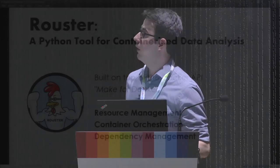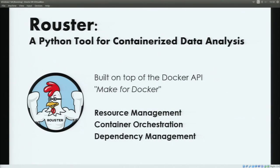I was tinkering with Docker a bit on my own time and I happened upon these problems, so I decided to start writing a small tool called Rooster, which is built on top of the Docker API. If you would summarize it in one sentence, you could say that it's make for Docker. It provides basically three functionalities: resource management, container orchestration, and dependency management. I have to say it's still an early prototype, but I want to show you a bit how it works.